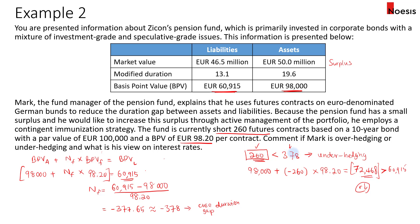If Mark were to short 400 contracts, which is more than 378, that would be considered over-hedging, and the only reason he would do this is if he thinks interest rates are going to rise — then you short more than what is needed. Be careful with the terms over-hedging and under-hedging: they must be assessed relative to the current position versus the action taken. In example 1, the BPV of the asset was less than the BPV of the liability, whereas in example 2 the BPV of the asset is greater than the BPV of the liabilities.